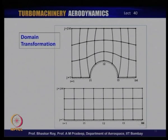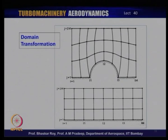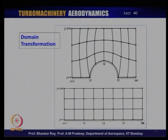In computational parlance, the computation may converge in the computational domain but you may have difficulty converting back into the physical domain, meaning the computation would be considered not fully converged. Both forward and backward transformation need to be completed before you can claim you have a solution applicable to the physical domain.